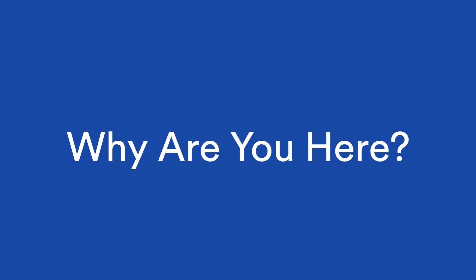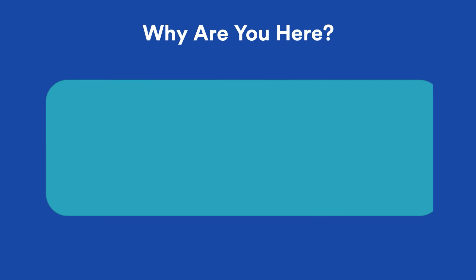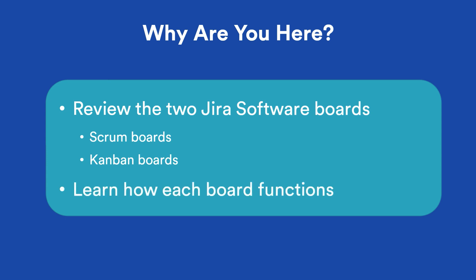This is the first in a series of tutorials that will introduce you to the basics of Jira software. In this tutorial, you'll learn about the two Agile boards, Scrum and Kanban. You'll also learn how each board functions to help you and your team plan and execute work.